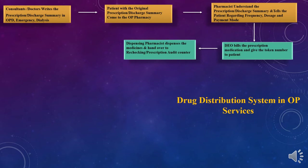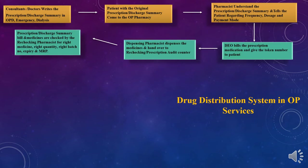Once the prescription and bill are handed to the dispensing pharmacist, they dispense the medication and forward it to the next step — the rechecking and prescription audit counter. During rechecking, the prescription, discharge summary, bill, and medication are checked by the rechecking pharmacist for the right medicine, right quantity, right batch number, expiry date, and MRP.